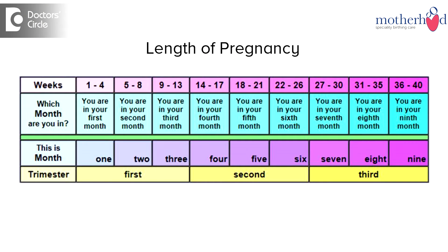The length of the pregnancy is generally 40 weeks or 10 lunar months. In the English calendar, it is 9 months and 7 days as per Naegele's rule, which most obstetricians follow.